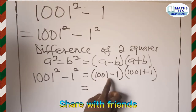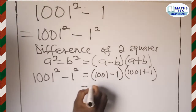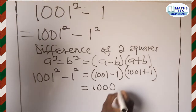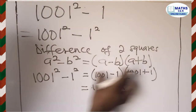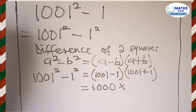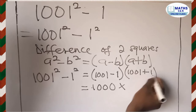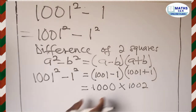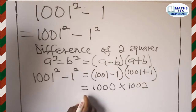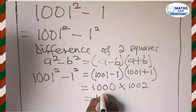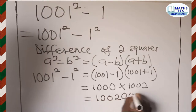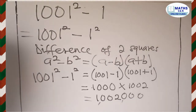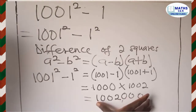1001 minus 1 gives us 1000, and 1001 plus 1 gives us 1002. So we multiply 1000 by 1002, which gives us 1,002,000 — that is one million and two thousand.